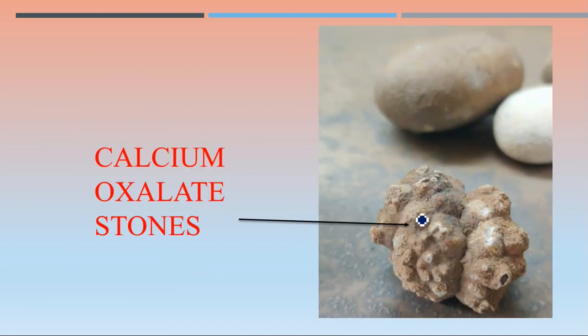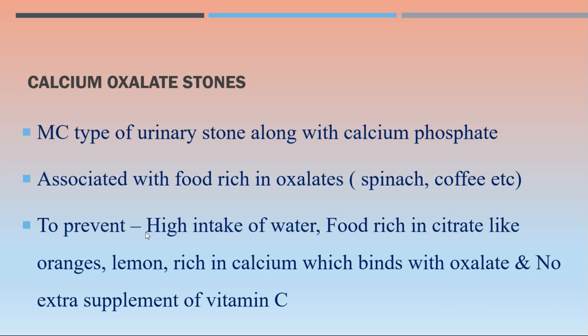The second specimen shows calcium oxalate stones. These are the most common type of urinary stones, along with calcium phosphate. These are important points regarding calcium oxalate stones that can be asked during your viva, exam, or entrance exams.